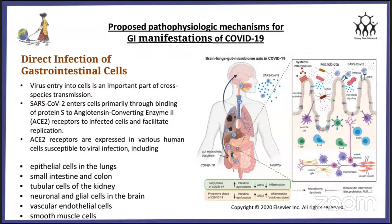ACE2 receptors are present in different parts of the body: epithelial cells in the lungs, small intestine and colon, tubular cells of the kidney, neuronal and glial cells in the brain, and vascular endothelial cells.